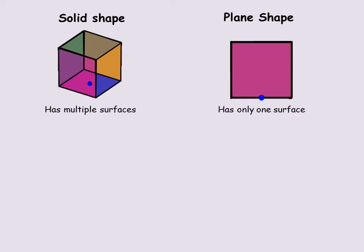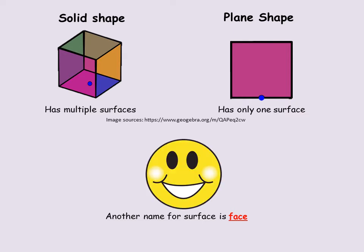Solid shapes have multiple surfaces, and another thing about solid shapes is they can be held in the hand — they can stand by themselves without any support. They have length, width, and depth. Another name for a surface when talking about shapes is 'face' (F-A-C-E). So when I say surface I also mean face, and when I say face I mean surface — a solid shape has multiple surfaces, or multiple faces.